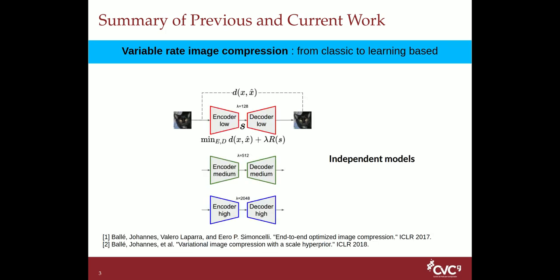For deep image compression, the objective function usually has two terms: one is distortion between reconstruction and original image, and another is rate, which is the entropy of latent presentation of the original image. The compression rate depends on the trade-off between these two terms. In most deep image compression methods, they train many independent models with different rate-distortion trade-offs for different rates.